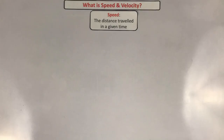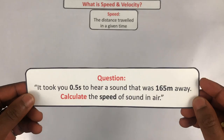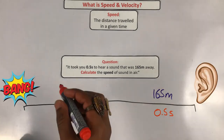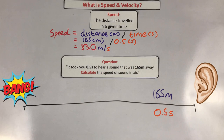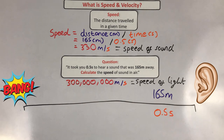Try to work out the speed of sound in air: it took 0.5 seconds to hear a sound that was 165 meters away. Substituting the numbers, we get 165 meters divided by 0.5 seconds, which gives us 330 meters per second — that is the speed of sound in air. The speed of light, on the other hand, is roughly 300 million meters per second, so it's a lot faster.